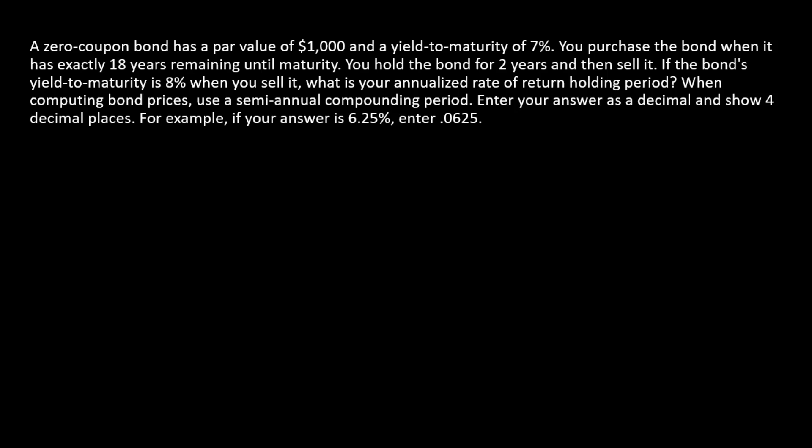Here we need to calculate the holding period return for a zero-coupon bond. The idea is an investor is going to purchase the bond at one point in time and instead of holding it until maturity, he's going to sell it.